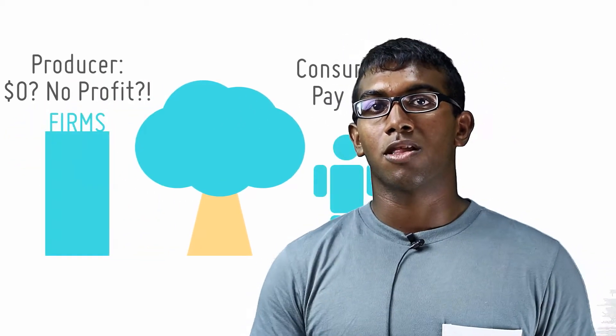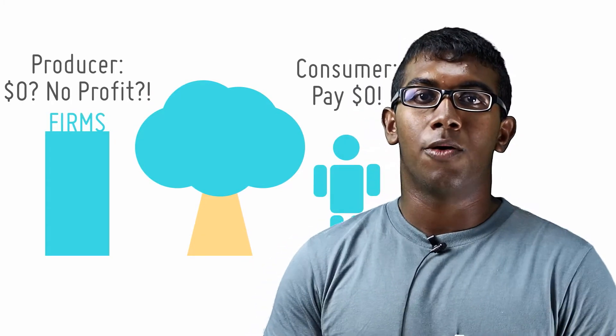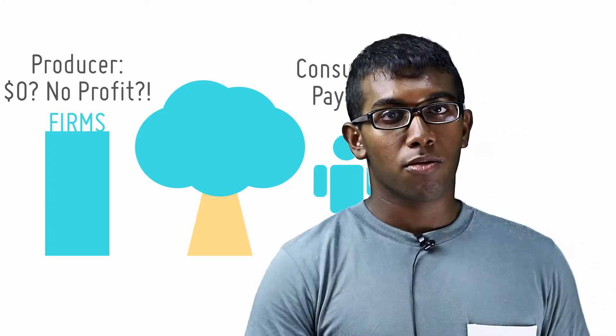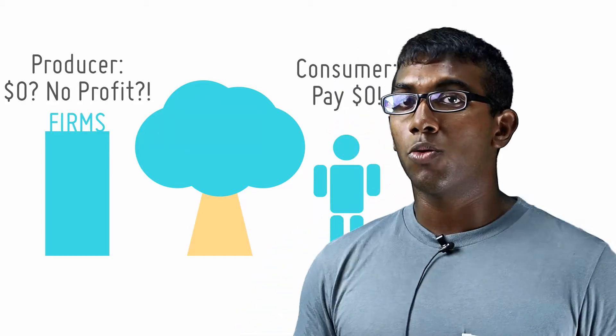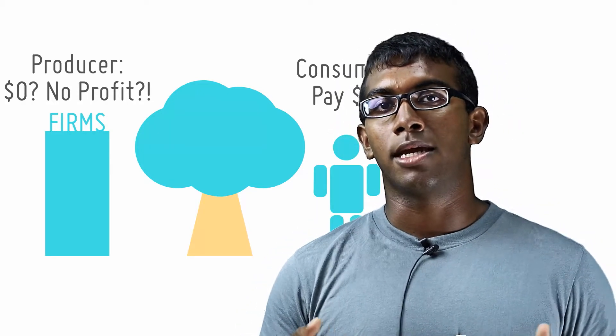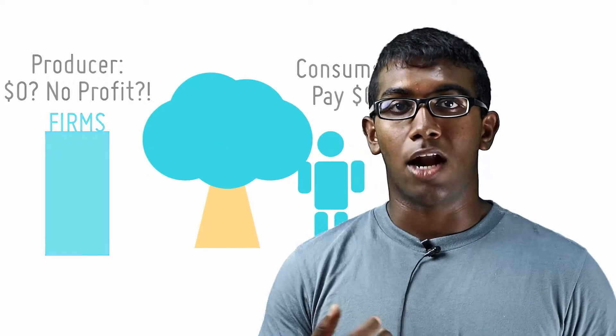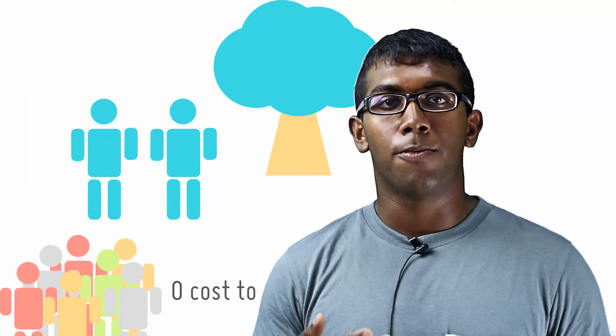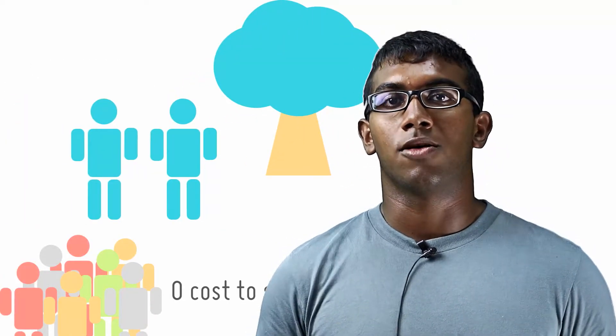You can see that this produces a problem on both sides of the market because consumers want to pay zero and producers don't want to produce a good where they get no money for it. This is allocatively inefficient because one more person's consumption of the good costs society nothing at all.